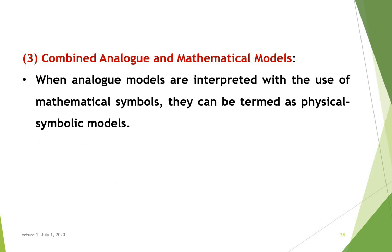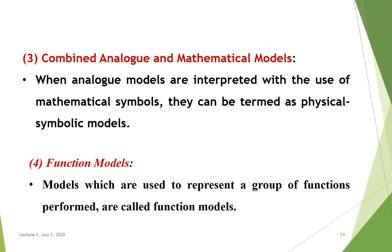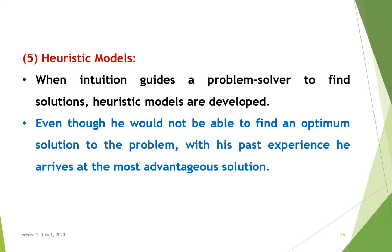Third come combined analog and mathematical models. When analog models are interpreted with the use of mathematical symbols, they can be termed as physical symbolic models. Next come functional models, which are used to represent a group of function performances. If everything else fails, then heuristic models come into the picture. When intuition guides a problem solver to find a solution, heuristic models are developed. Even though he would not be able to find an optimal solution, with his past experience he arrives at the most advantageous solution.